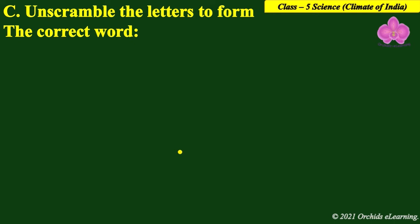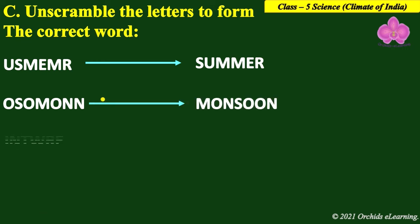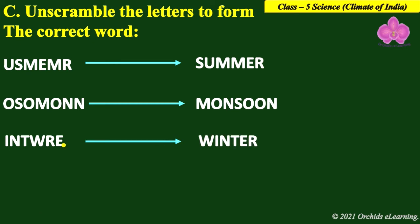Next question — unscramble the letters to form the correct word. The first word is U-S-M-E-R, which unscrambles to Summer. Next, O-S-O-M-O-N-N — any guesses? It is Monsoon. Next, I-M-T-W-R-E — that is Winter. And P-S-R-N-I-G — that is Spring.